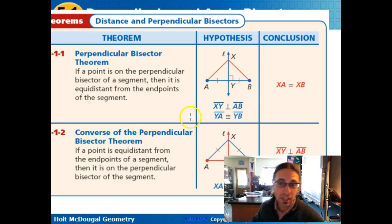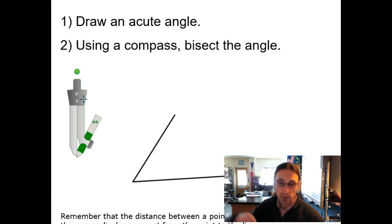And the converse of that is also true. Well, you don't know if you're on the perpendicular bisector, but if a point is equidistant from the endpoints of a segment, then I must be on the perpendicular bisector. All right, so how does this look? Well, let me do one more, and then we'll jump into a couple of problems.